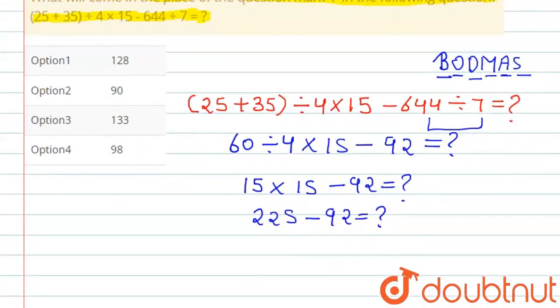Now subtraction: 225 minus 92, that is 133 equals question mark. So the question mark value is 133. This is our final answer. I hope you understand the answer. Checking the options, option third is correct, that is 133.